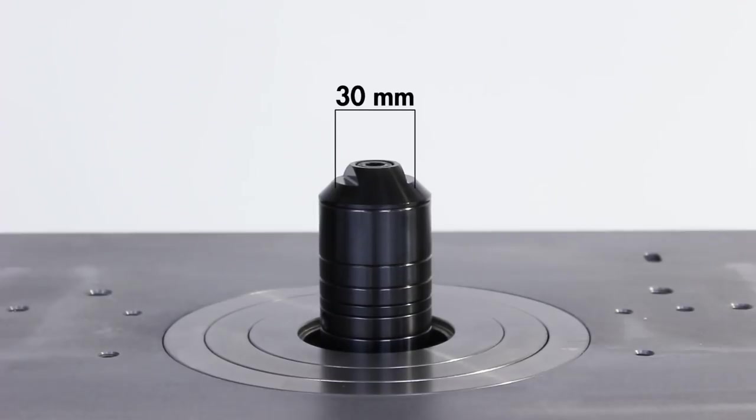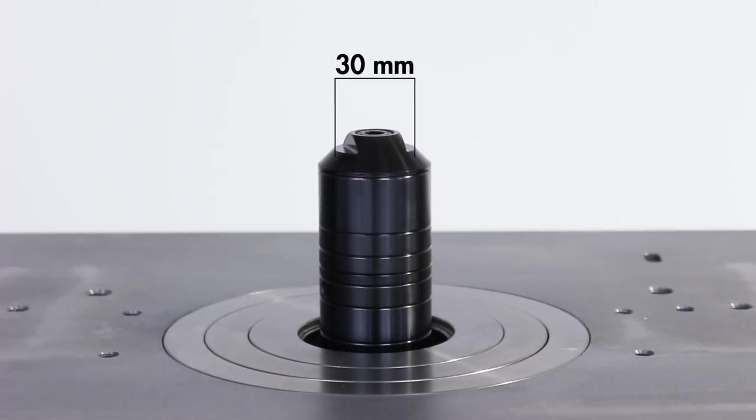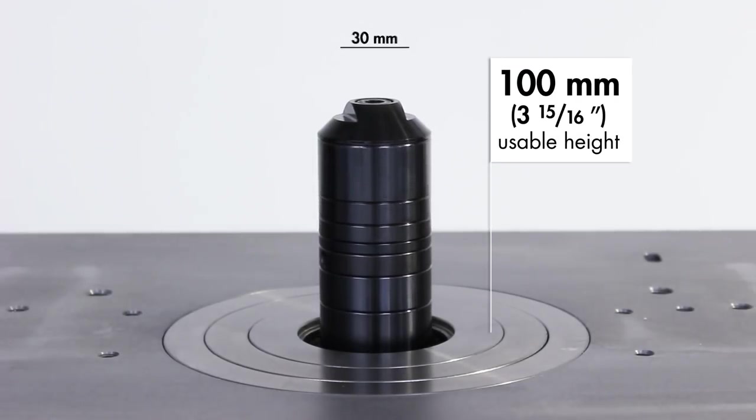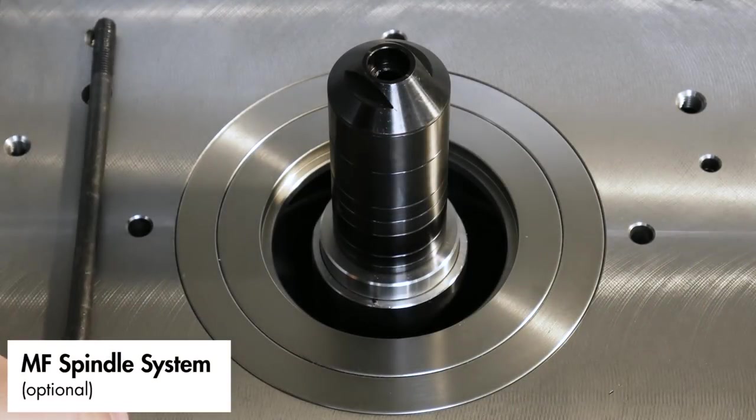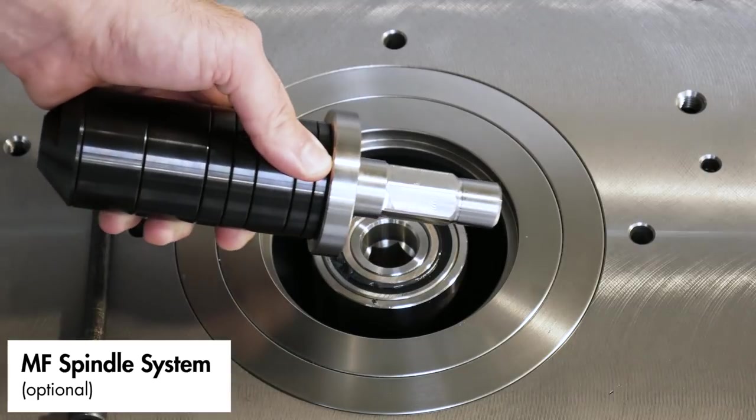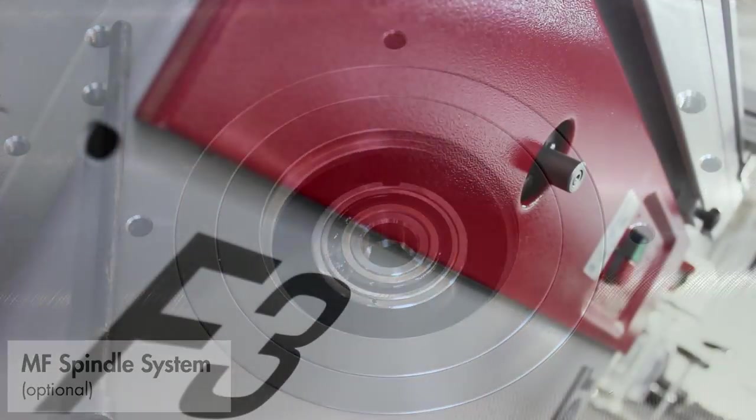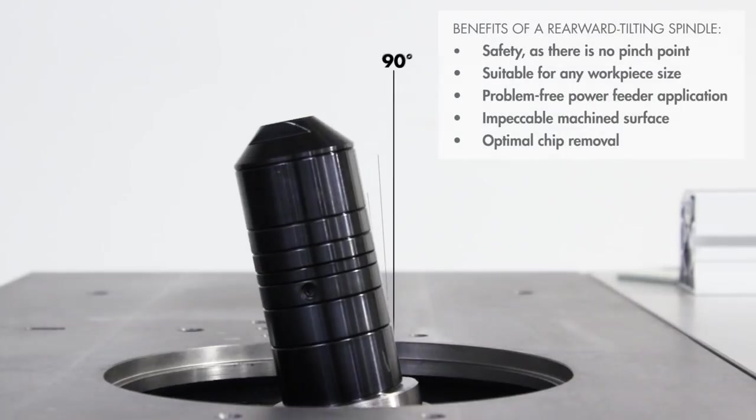The Hammer F3 features a 30 millimeter spindle with a 100 millimeter usable height. A range of additional spindles at different sizes are available when you upgrade to the interchangeable MF spindle system. The spindle can be tilted from 90 to 45 degrees in a rearward direction that enables safer operation and optimal chip removal.